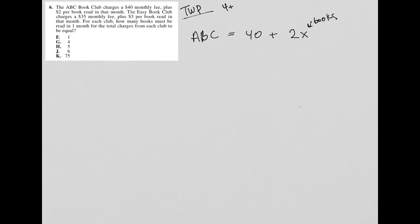ABC obviously is a club, and this is all charges. So $40 and $2 times X. Then the next sentence says the easy book club charges a $35 monthly fee plus $3 per book. So easy equals 35 plus 3X.